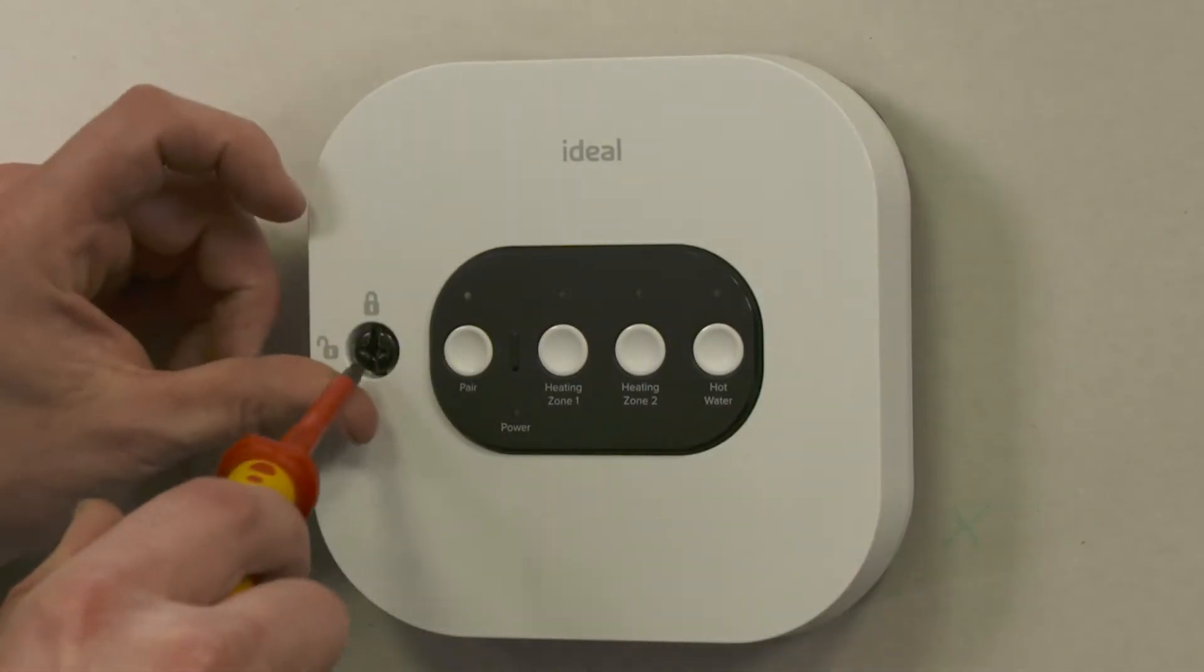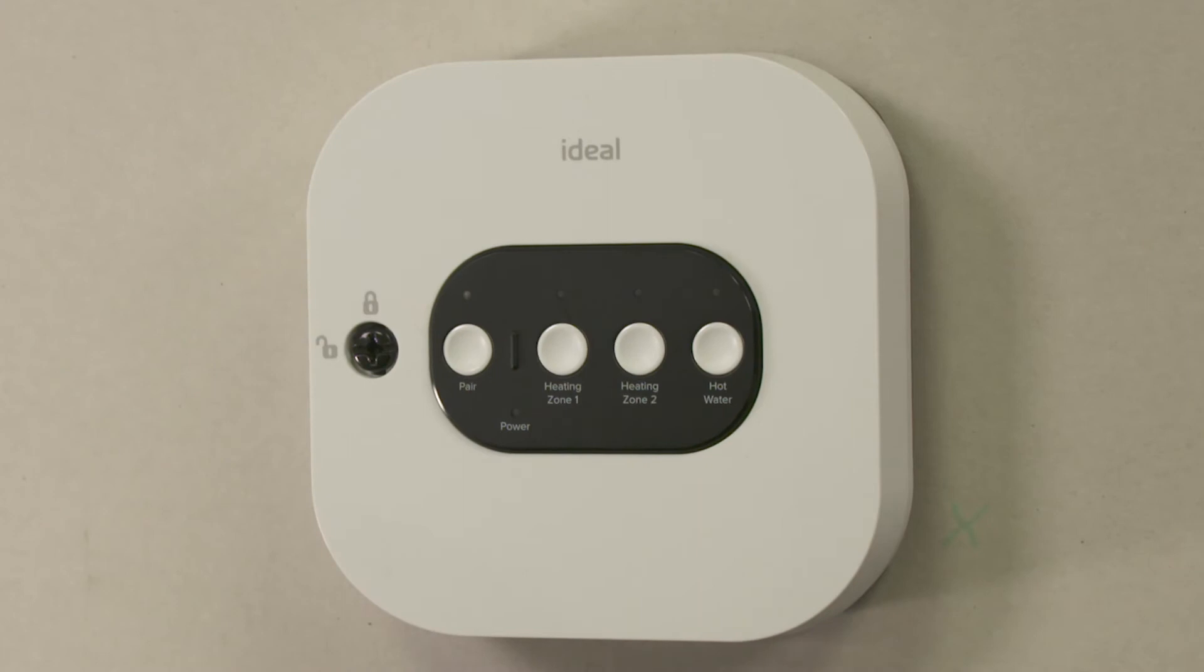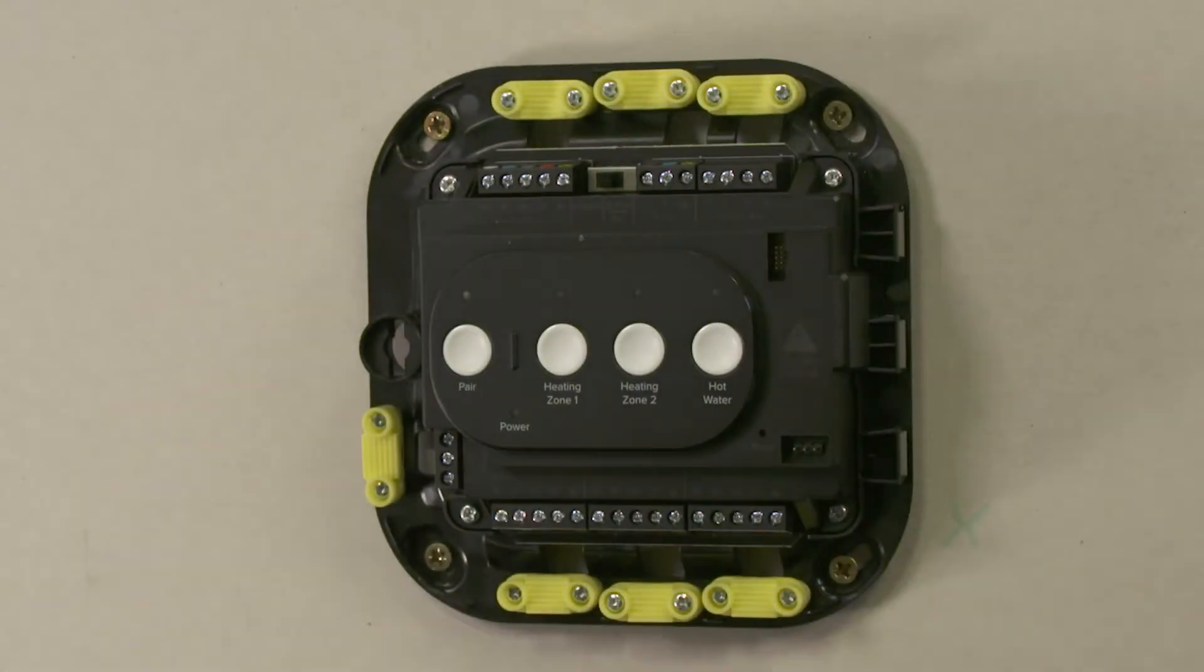To unlock the cover, turn the locking screw one quarter of a turn anti-clockwise. The smart wiring center is supplied in the unlock position. The cover opens from the left-hand side.